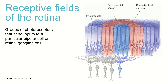In this video we will go over the definition of a receptive field and how light is transduced and encoded via on and off center bipolar and ganglion cells. Receptive fields are groups of photoreceptors that send inputs to a particular bipolar cell or retinal ganglion cell, which will then pass the information on to the brain.